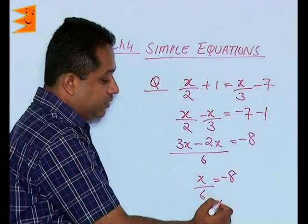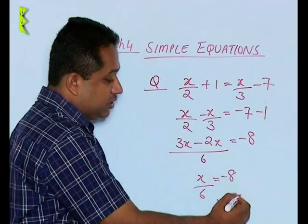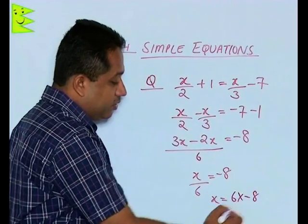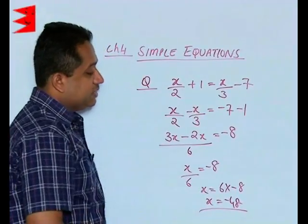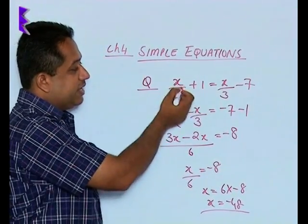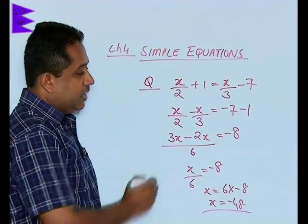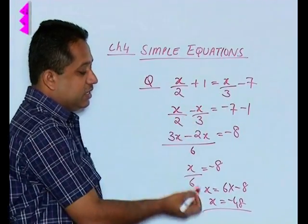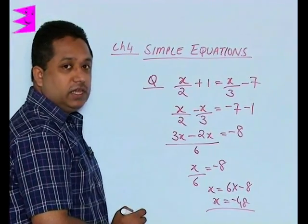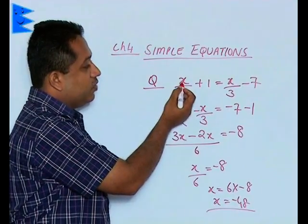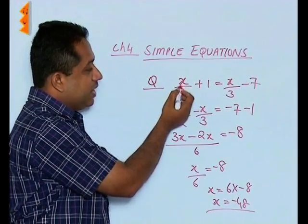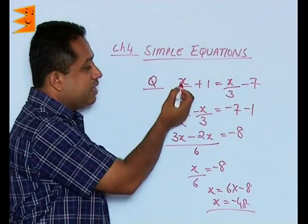So 3x - 2x = x/6 = -8. We cross multiply and get x = 6 × (-8), so x = -48. Therefore, when we substitute x = -48 in the LHS and RHS, we'll get both sides equal. Let's verify: if we put -48 here, -48/2 = -24, so -24 + 1 = -23.